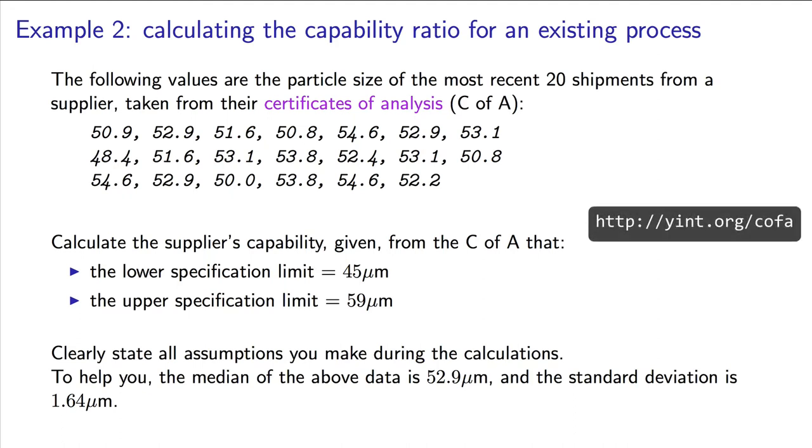Download these data from this link of 20 recent shipments from a supplier, and calculate what the supplier's capability ratio is, given that on their certificate of analysis, the lower specification limit was 45 microns and the upper specification limit was 59 microns.